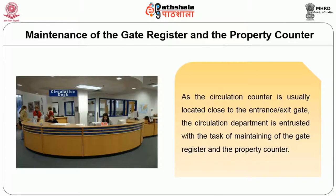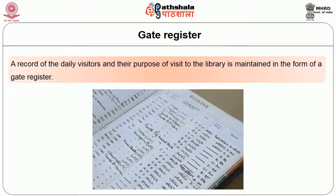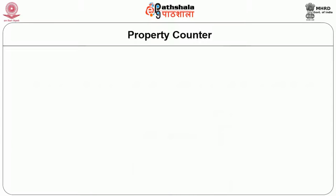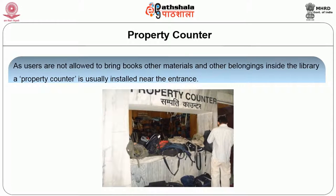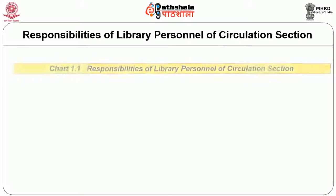As circulation is usually located close to the entrance or exit gate, the circulation department is entrusted with maintaining the gate register and property counter. A record of daily visitors and the purpose of their visit to the library is maintained in the form of a gate register. As users are not allowed to bring books and other belongings inside the library, a property counter is usually installed near the entrance.